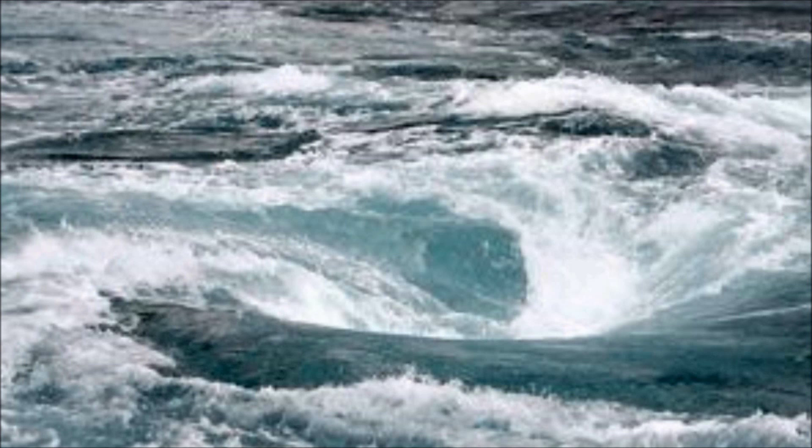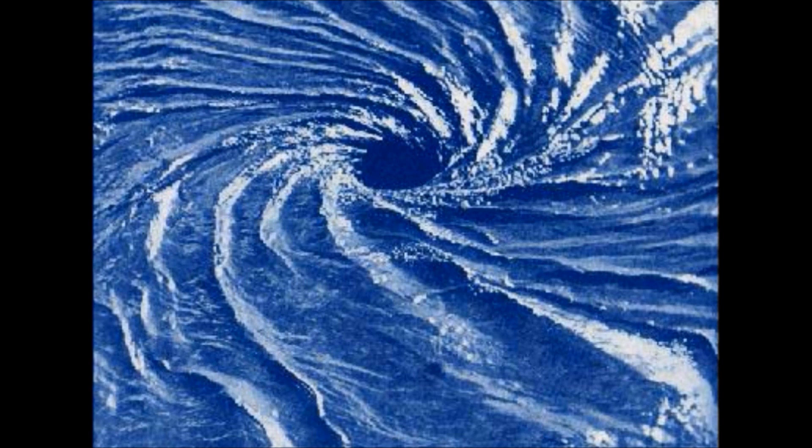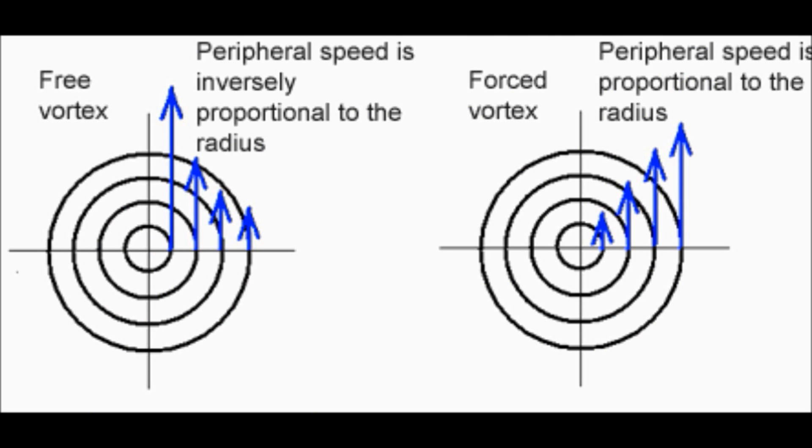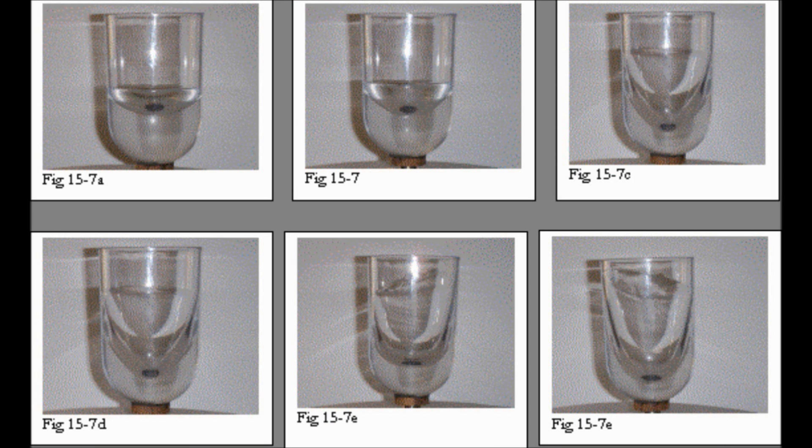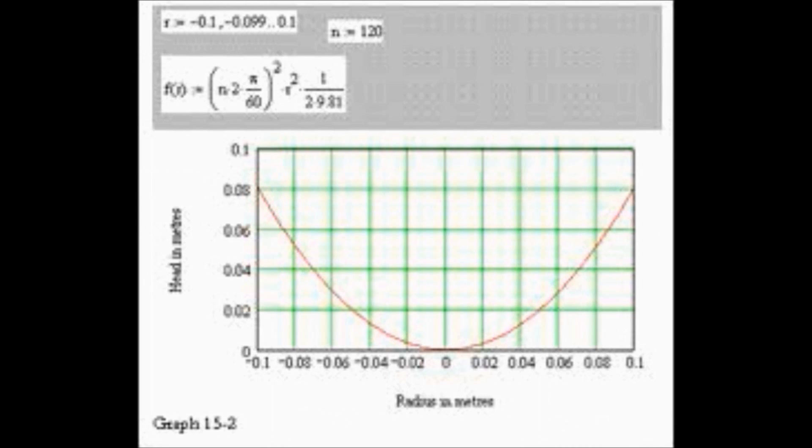The motion of fluid swirling rapidly around the center is known as a vortex. When a liquid contained in a cylindrical vessel is given rotation, the surface of water no longer remains horizontal, but it depresses at the center and rises near the walls of the vessel.